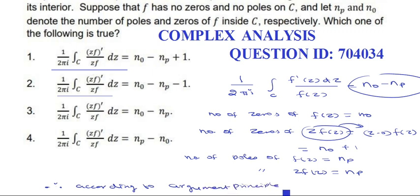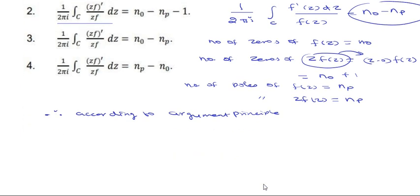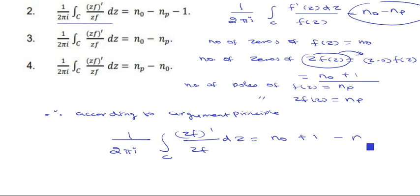1 over 2πi integral over C, zf' by zf dz is equal to the number of zeros, which is N_0 plus 1, minus the number of poles, which is N_p. This is nothing but N_0 minus N_p plus 1.